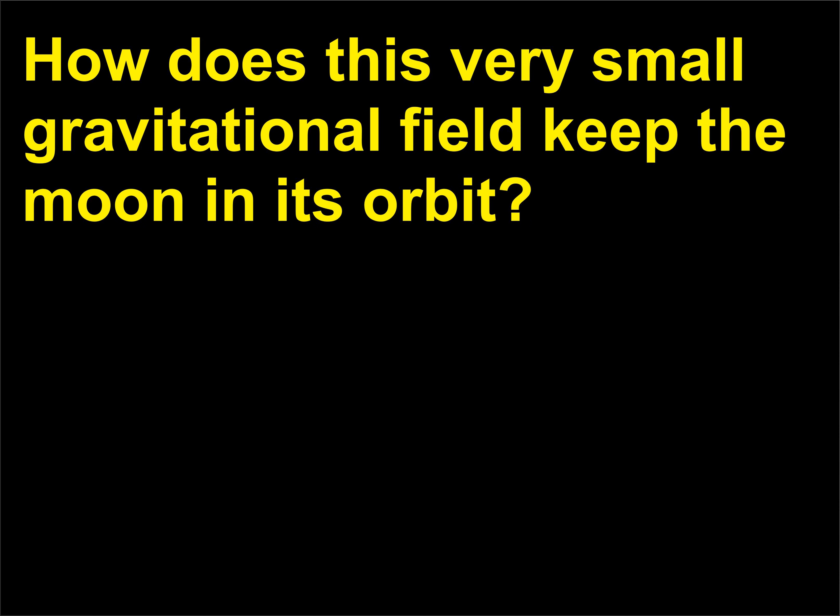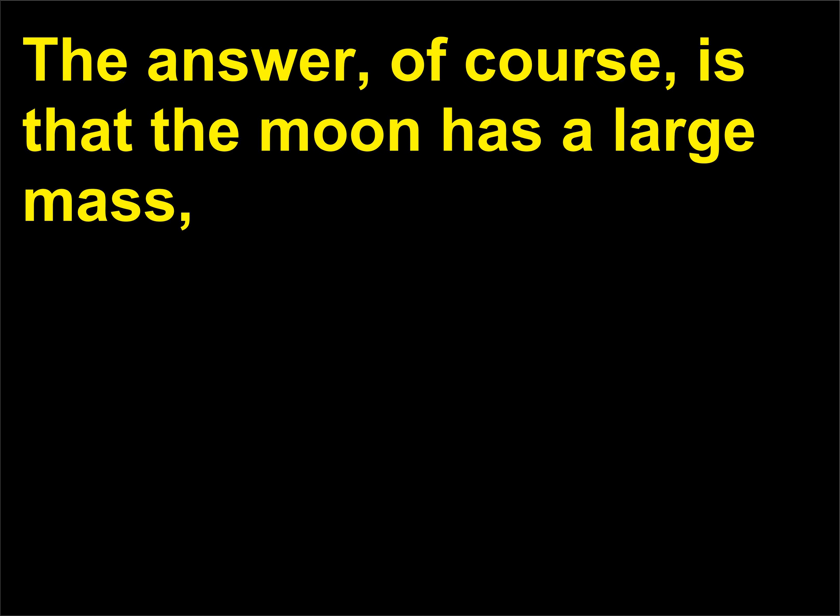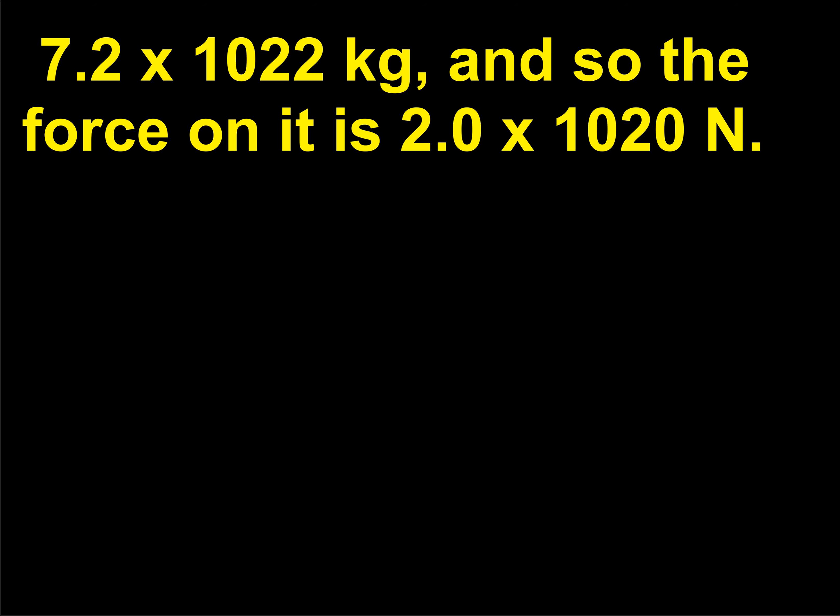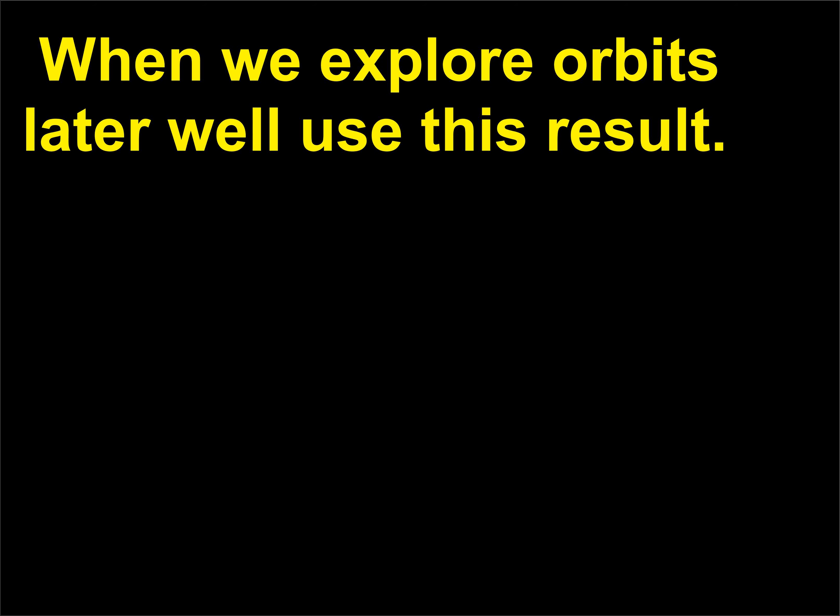How does this very small gravitational field keep the moon in its orbit? The answer is that the moon has a large mass — 7.2 × 10²² kilograms — so the force on it is 2.0 × 10²⁰ N. When we explore orbits later, we'll use this result.